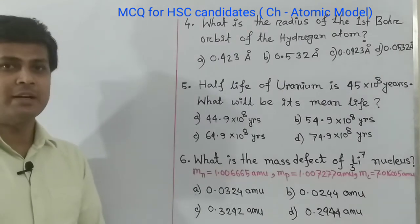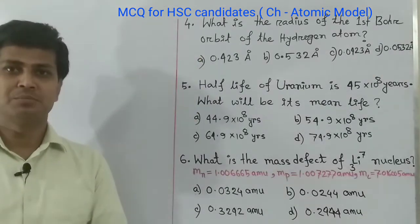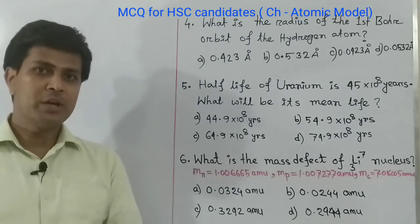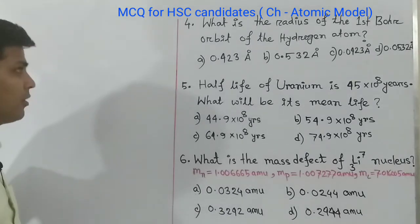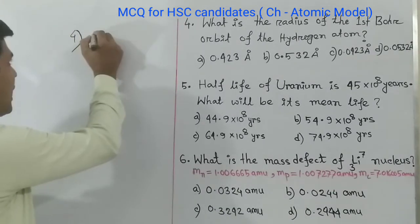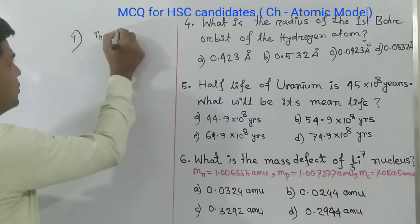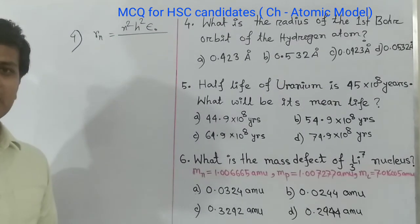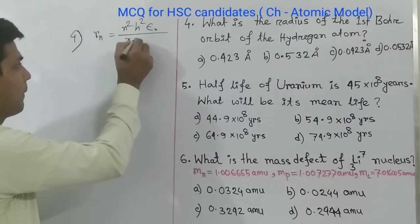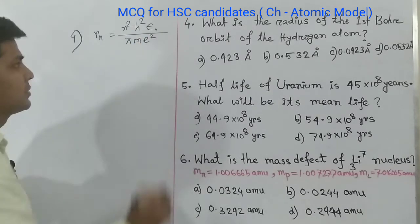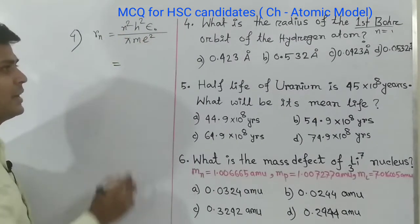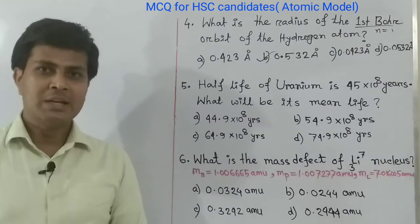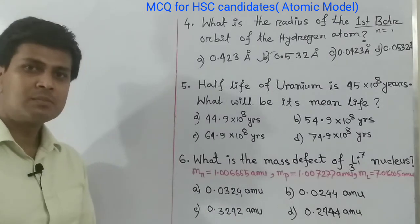MCQ 4: What is the radius of the first Bohr orbit of the hydrogen atom? Using the formula rn equals to n squared h squared epsilon naught divided by pi m e squared, and putting in all the values with n equals to 1, we get the result 0.532 angstrom.